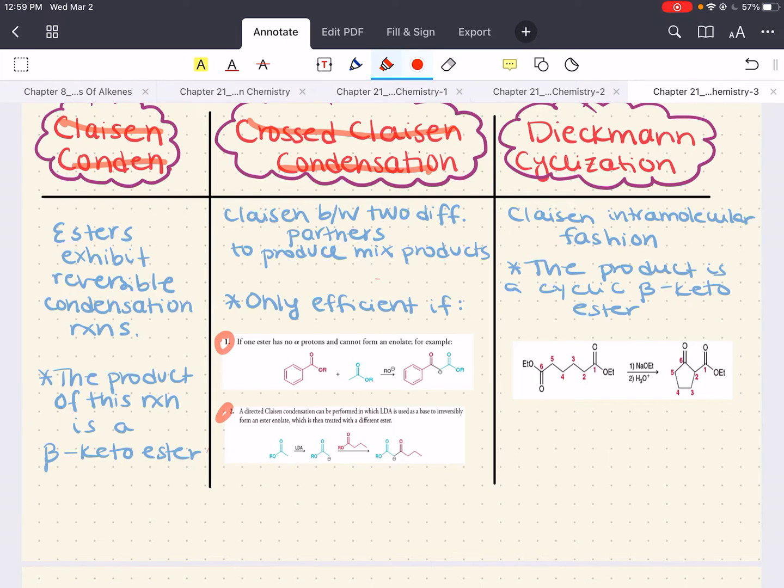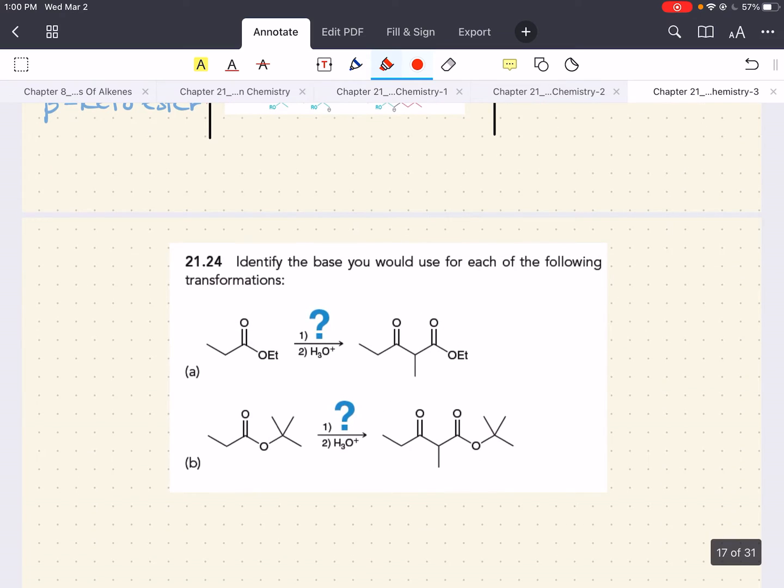Now, Claisen condensations can also occur in an intramolecular fashion, and this is known as Dieckmann cyclization. This is synthetically speaking, extremely important. And the product of this reaction is going to be cyclic beta-ketoester. Notice that the ester enolate and the ester group are both present in the molecule, resulting in an intramolecular attack.